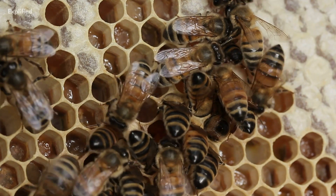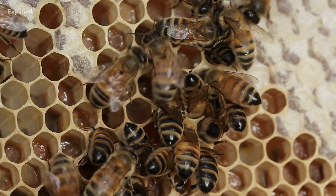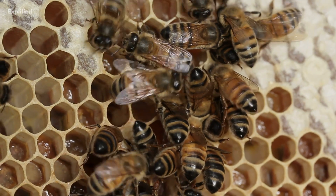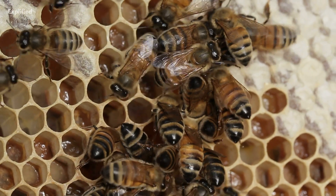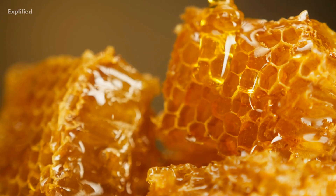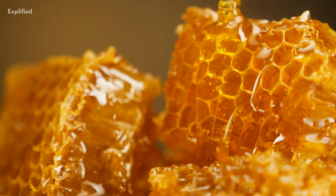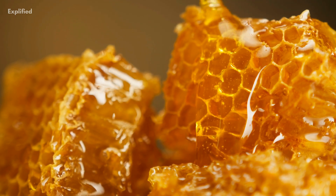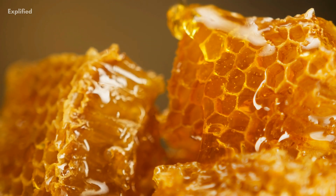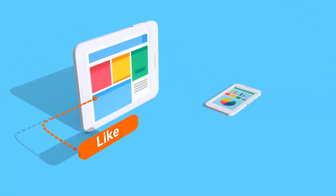Now for honeycombs: when they are made, the bees lay down the wax in a circular manner, but due to surface tension, the wax is pulled into a hexagonal shape. Bet you didn't know that — hope you learned something new from the video!